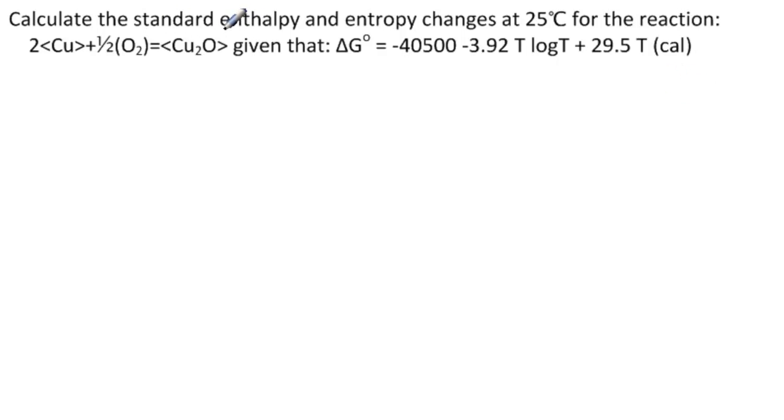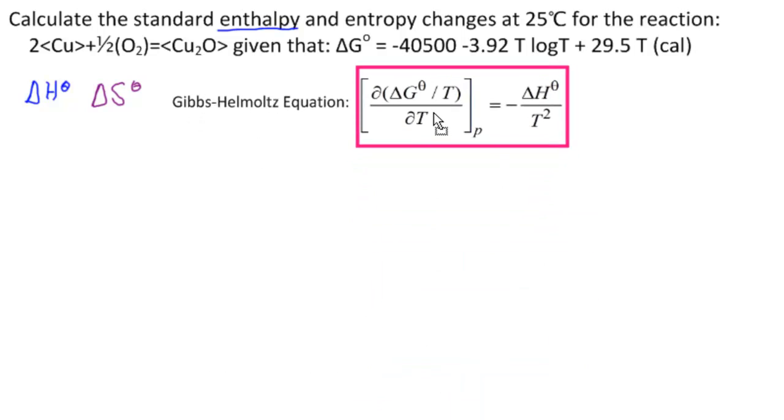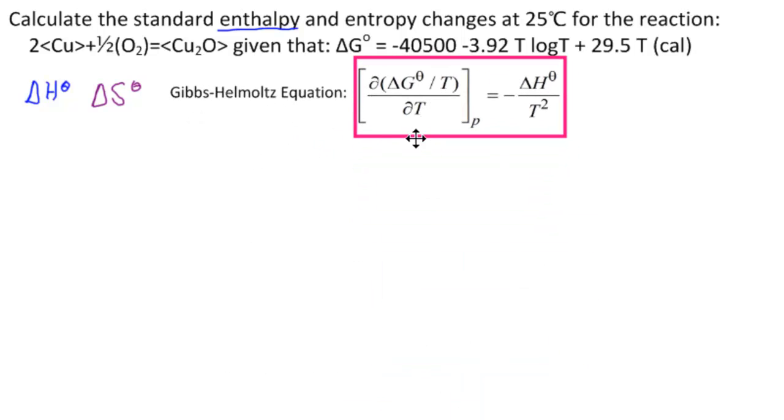So what do we want to find? The standard enthalpy change, delta H theta, and the standard entropy change, delta S theta. First, we're going to find delta H theta using delta G theta and the Gibbs-Helmholtz equation, and then we'll use delta H theta and delta G theta and the Gibbs equation in standard state to find delta S theta.